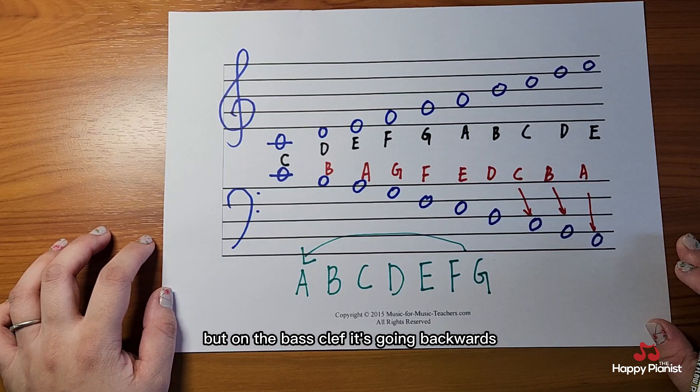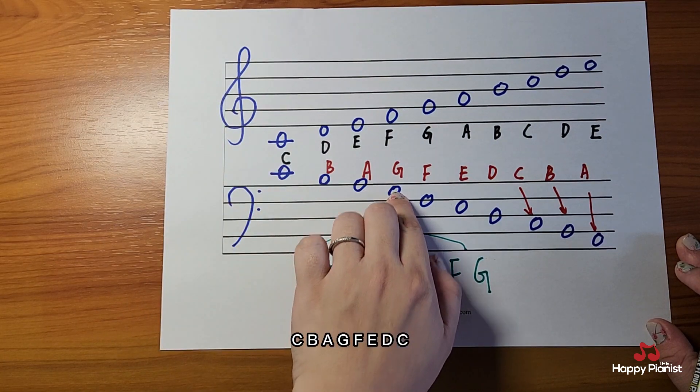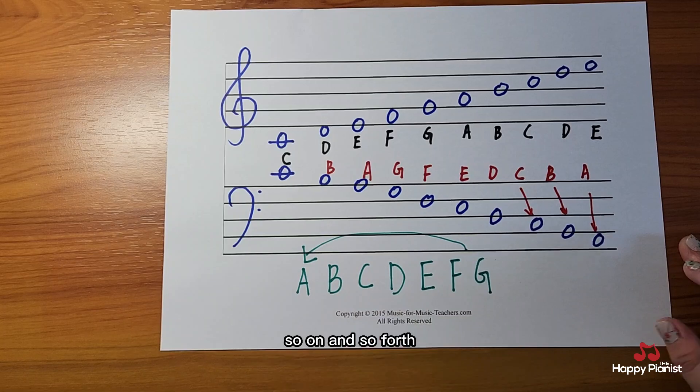But on the bass clef, it's going backwards. C, B, A, G, F, E, D, C. So on and so forth.